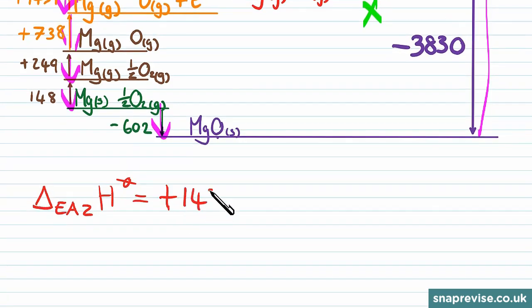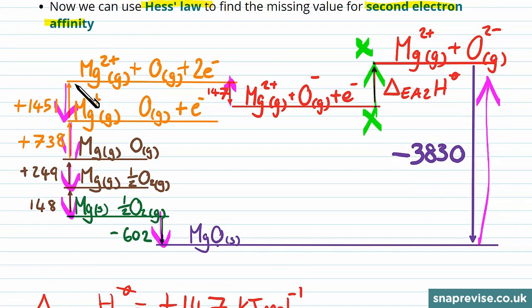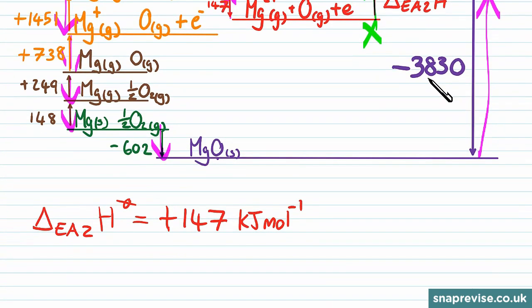Then as we follow the path around here, we're going against the original orange arrows. So these become minus signs because we're decreasing in energy first by 1451 kilojoules per mole, then by 738 kilojoules per mole. And now we can reverse the atomization steps. So again, we're decreasing in energy both of these times, first by 249, then by 148.